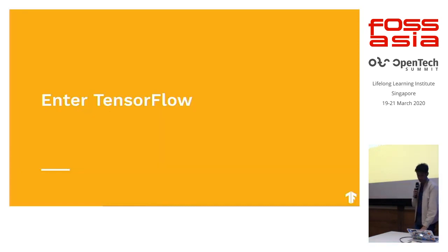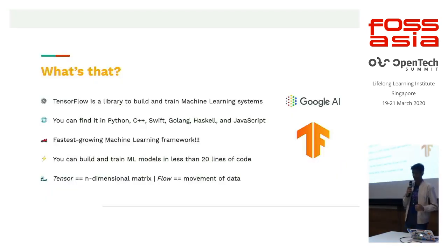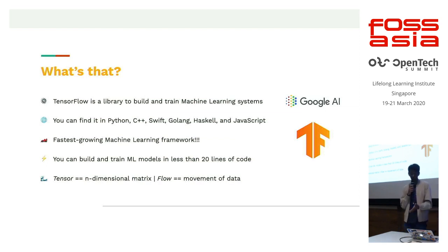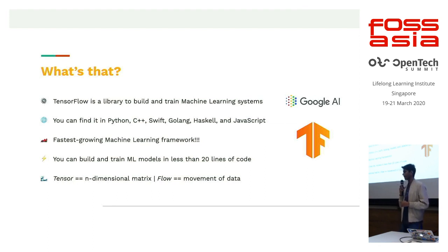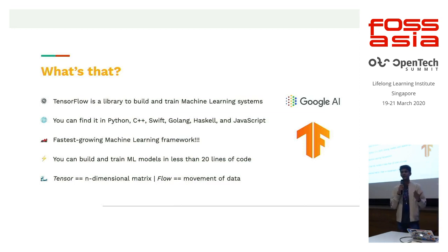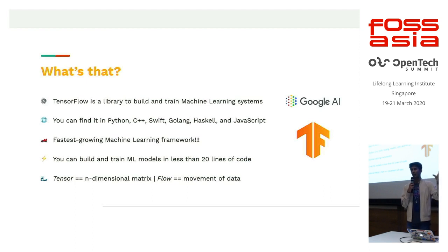TensorFlow is a library built by Google AI. Its beta version released somewhere back in 2015, and ever since then it's one of the largest growing machine learning frameworks on the planet. You can use TensorFlow in any one of several supported languages to build and train neural networks. It's also compatible with different kinds of hardware like GPUs and TPUs. Breaking down the name: 'tensor' is an n-dimensional array, and 'flow' means the movement of these n-dimensional arrays through the neural network to get that final mapping when you train it.